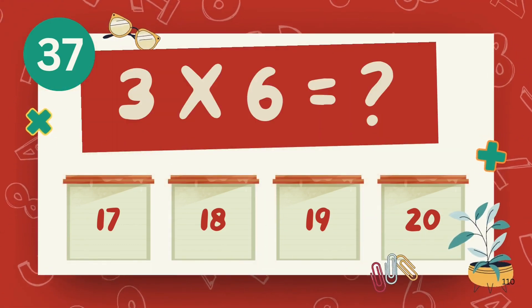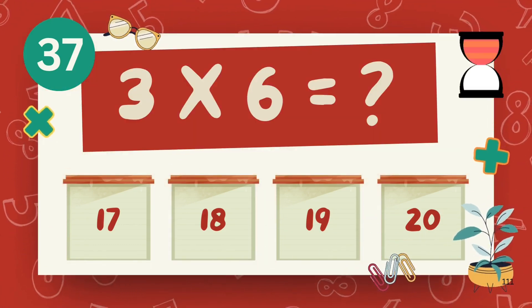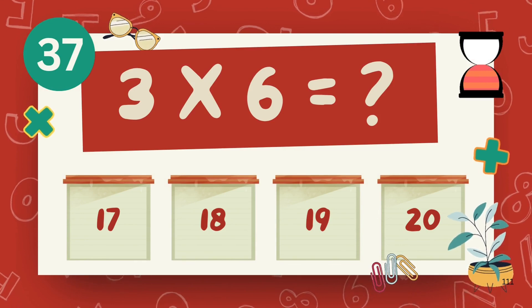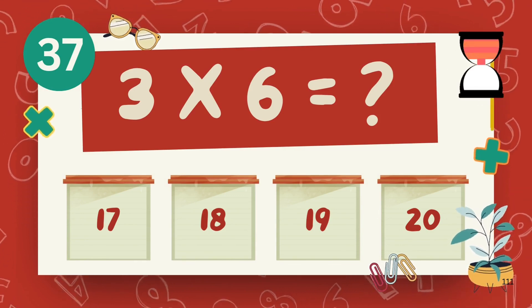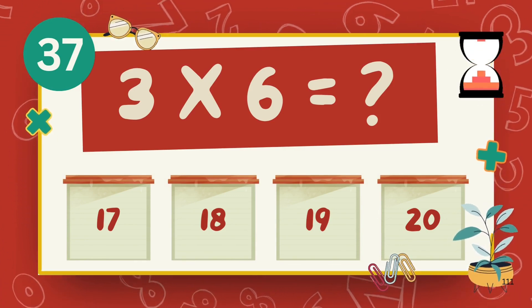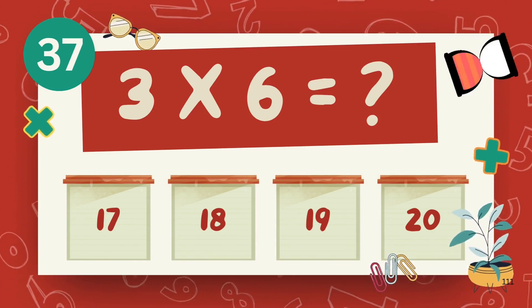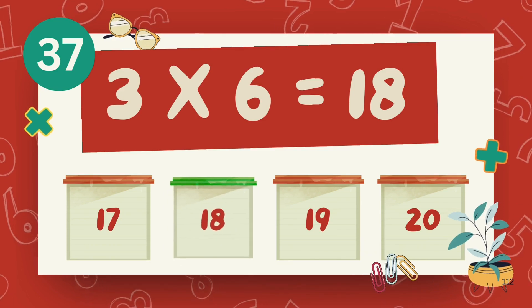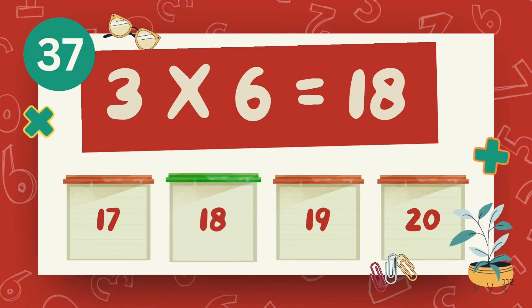What is three multiply six? The answer is eighteen.